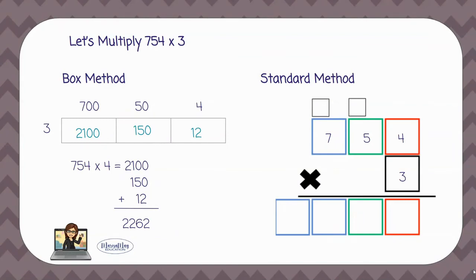I want to start on the far right side. So I'm going to multiply the red box times the black box. 4 times 3. I'm going to put the 2 in the red box at the bottom and I have to carry my 1.